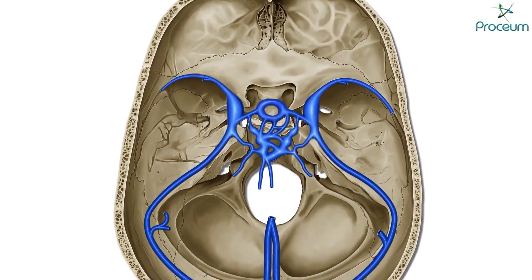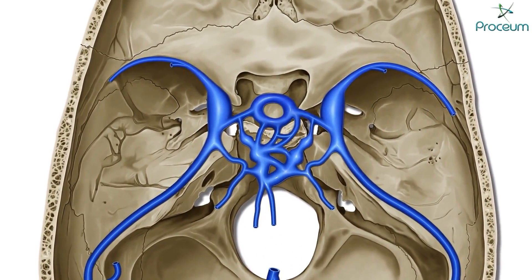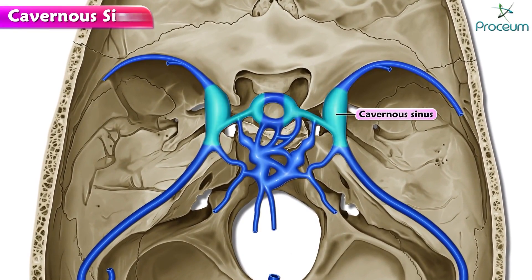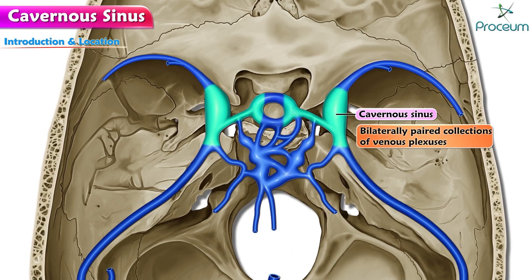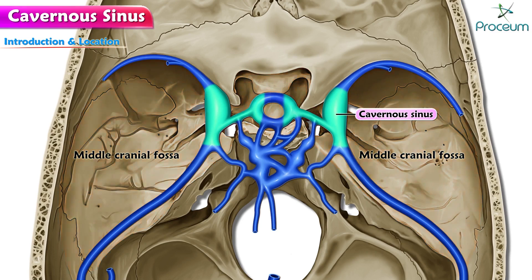Hello there everyone! In this module, we'll be going over the anatomy of the cavernous sinus. Let's begin with an introduction and the location. Cavernous sinuses are bilaterally paired collections of venous plexuses located on either side of the body of the sphenoid bone and sella turcica in the middle cranial fossa.